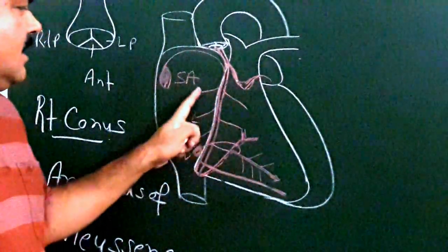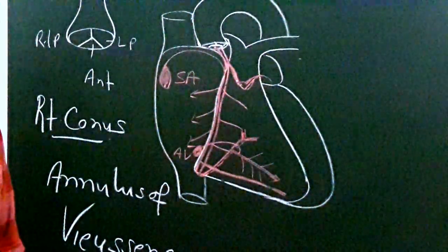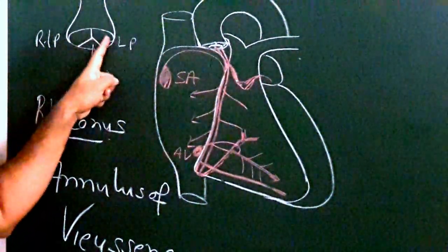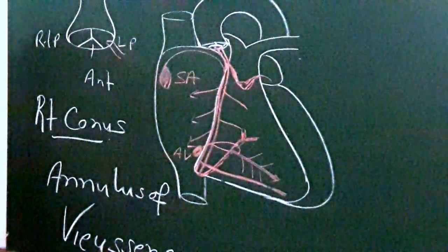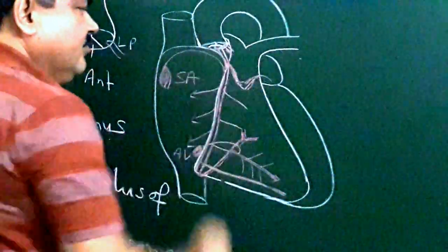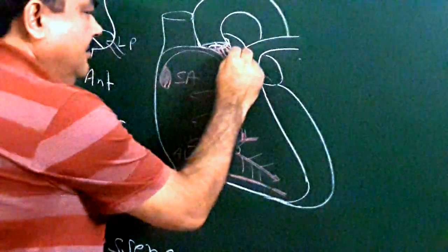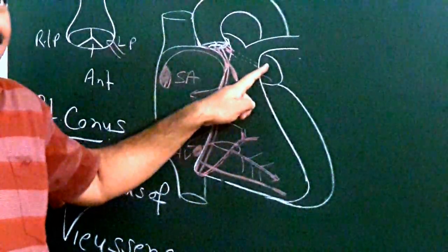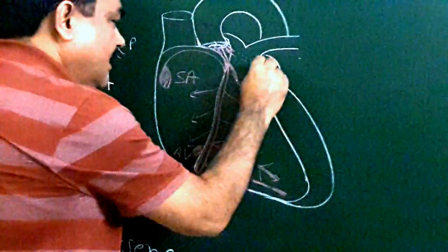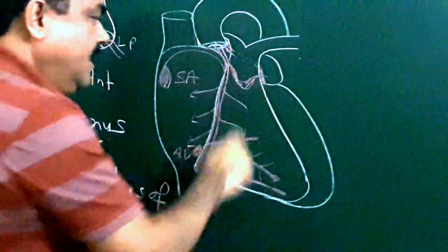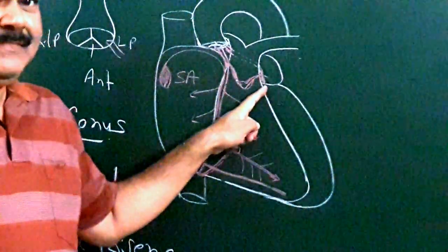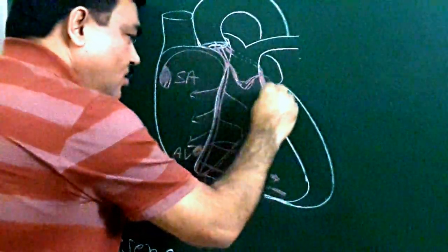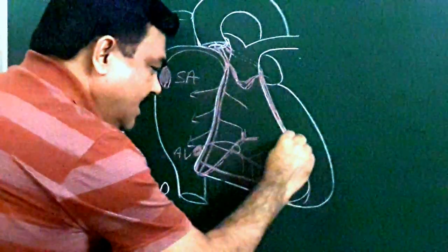Now let's discuss the left coronary artery. The left coronary artery arises from the left posterior aortic sinus. It passes between the pulmonary artery and the left atrium. It then divides into two branches; one passes through the anterior interventricular groove — this is the anterior interventricular artery.